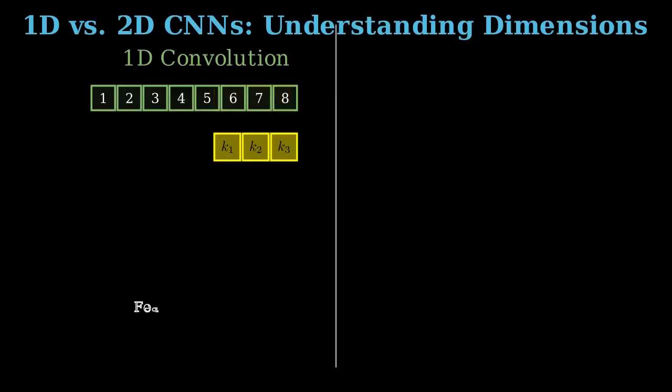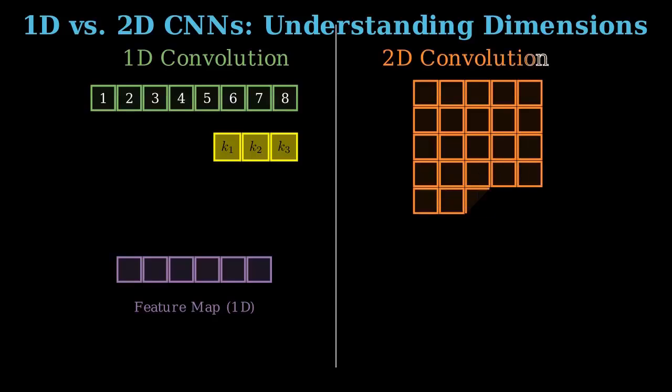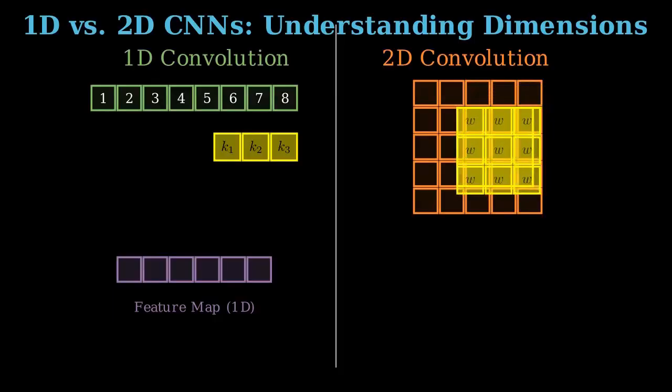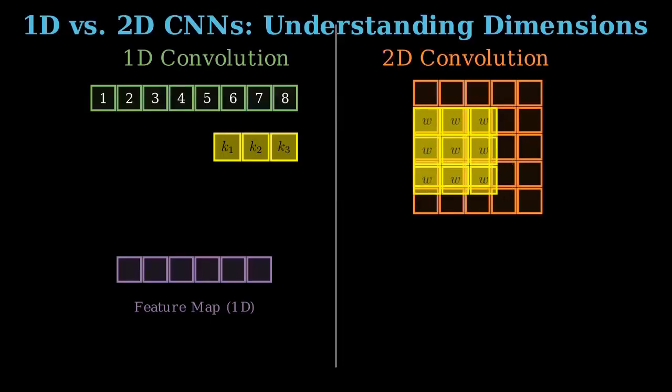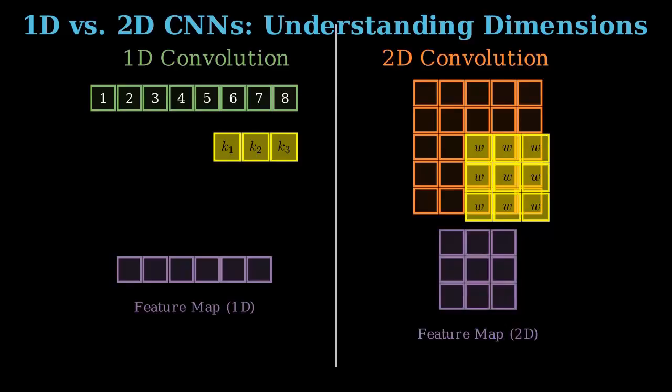On the right, we have the 2D convolution. The input data is a grid or matrix, typically an image, where data varies across both height and width. The 2D kernel is a square-shaped filter. This kernel has to slide across two axes, first moving horizontally, then shifting down a row, moving horizontally back and so on. This ensures it extracts spatial patterns from every location on the grid. The output is a two-dimensional feature map or feature image where the spatial relationships of the original data are preserved. In summary, 1D convolution moves along one axis to capture temporal dependencies, while 2D convolution moves along two axes to capture spatial features.